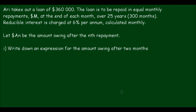Here we have a scenario. RE takes out a loan of $360,000. The loan is to be repaid in equal monthly repayments at the end of each month over 25 years, or 300 months. Reducible interest is charged at 6% per annum, calculated monthly. Let AN be the amount owing after the nth repayment. The first question is: write down an expression for the amount owing after 2 months.